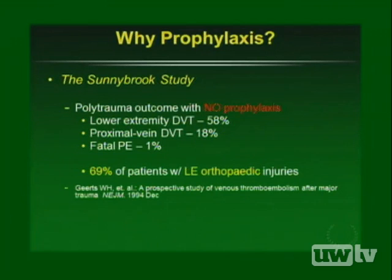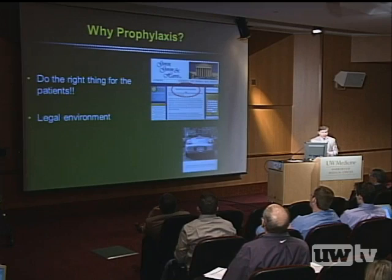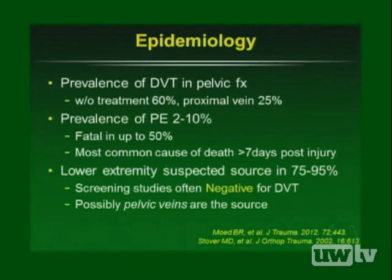We pursue prophylaxis to affect the fatal PE rate, to do the right thing for patients, and to be mindful of the legal environment — there are attorneys who specialize in blood clot cases. Regarding epidemiology, a 2012 study by Moed found that the prevalence of DVT in pelvic fractures without treatment is approximately 60% in proximal veins and 25% distally, with a PE rate of 2 to 10%. The most common cause of death 7 or more days post-injury is PE, and interestingly, lower extremity screening studies are often negative.